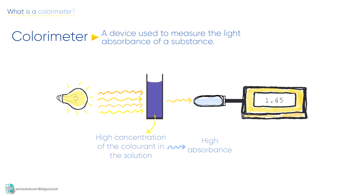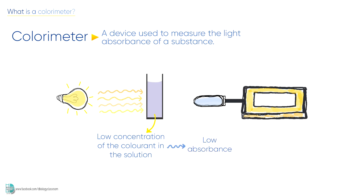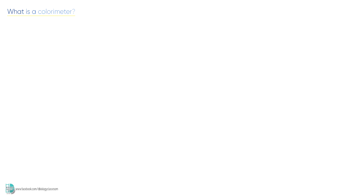On the contrary, if the color intensity of the solution is low, less light will be absorbed. More light can pass through the solution and gives a smaller value for the absorbance. Do notice that sometimes the result is expressed as the percentage transmission of light.